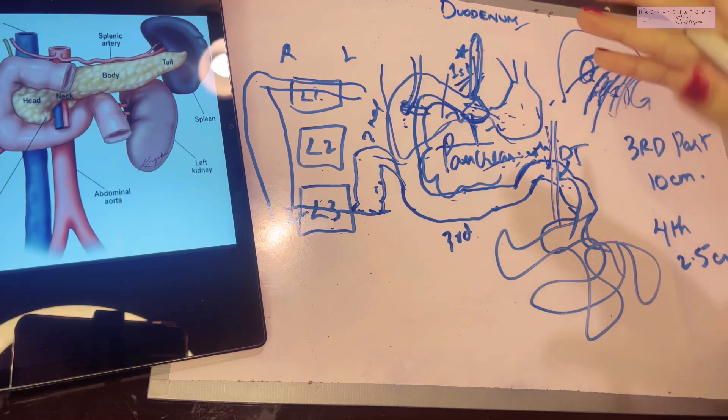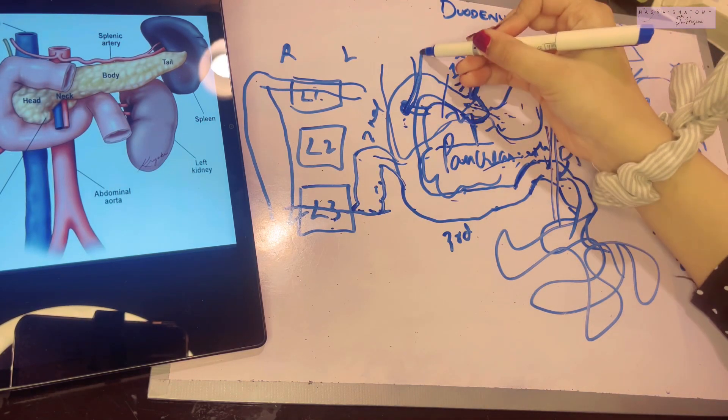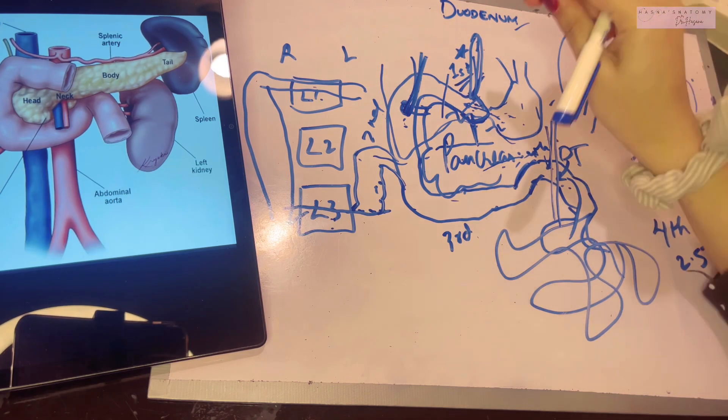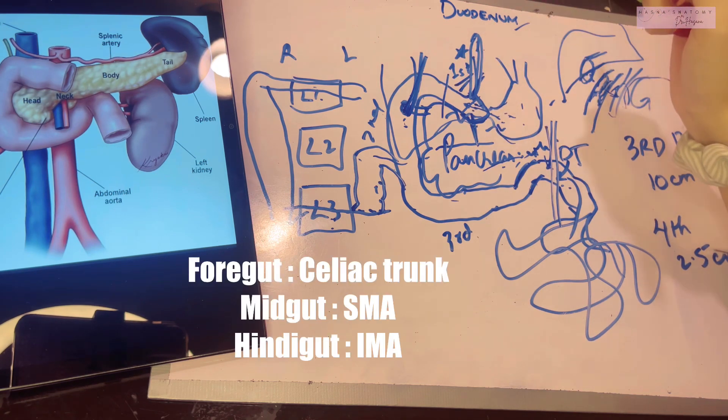What is the arterial supply of the duodenum? We've already studied that before the opening of the bile duct, the duodenum is a derivative of the foregut, which means it has to be supplied by the celiac trunk.